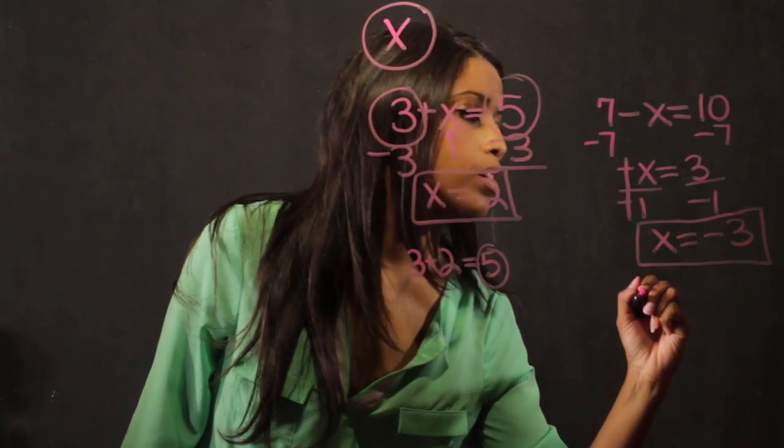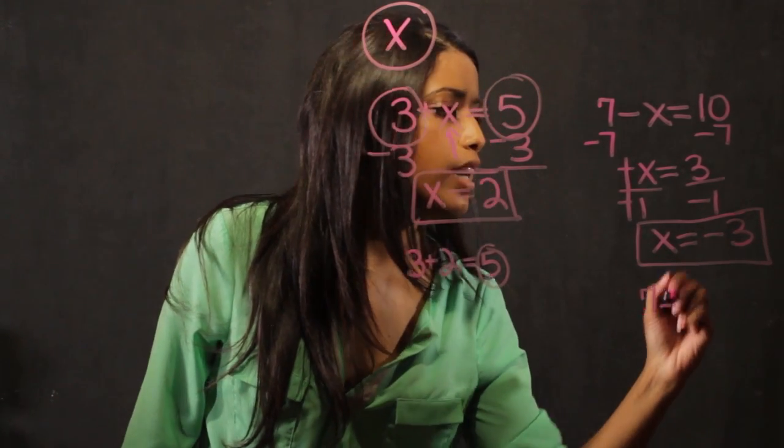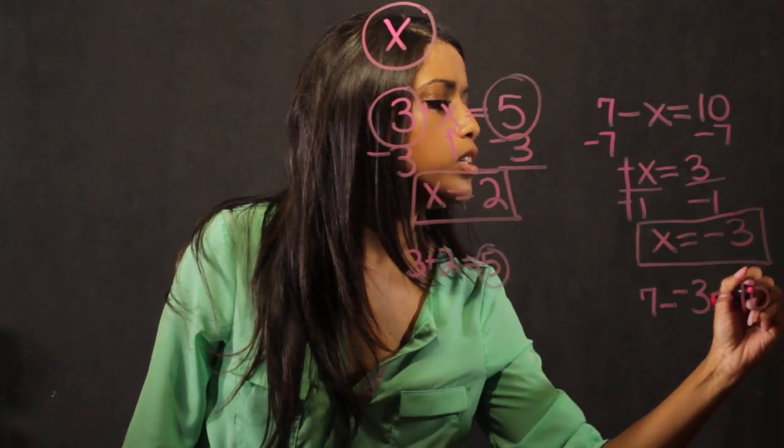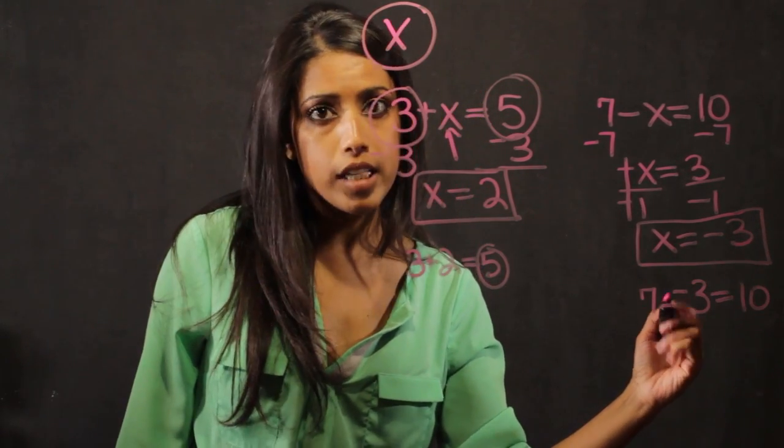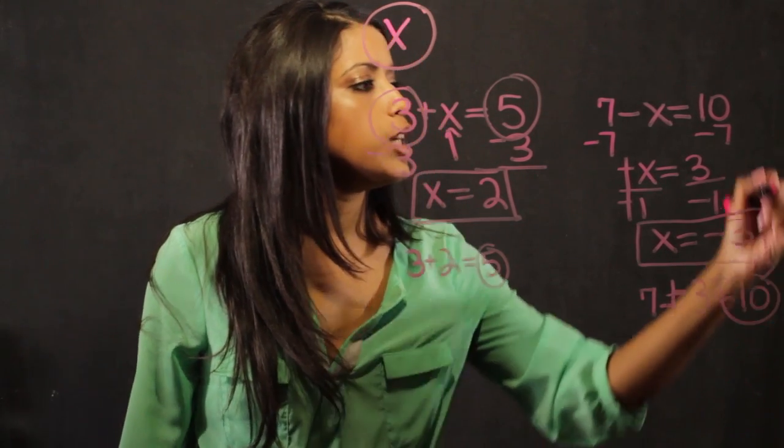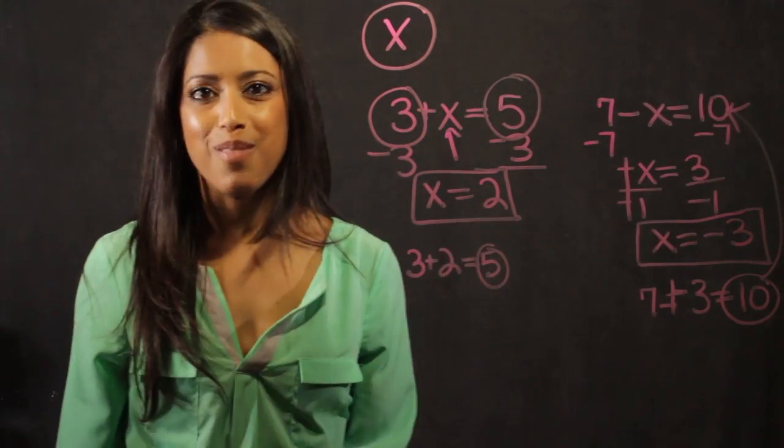And the same thing over here. 7 minus a minus 3 is equal to 10. When you have two negative symbols, it becomes a plus sign. And 10 is equal to what we needed it to be up here.